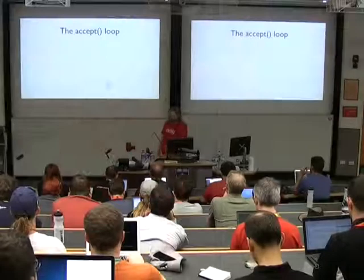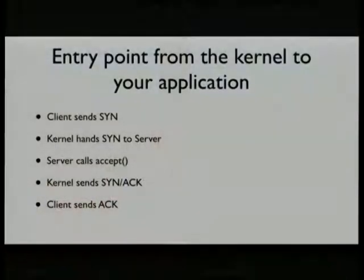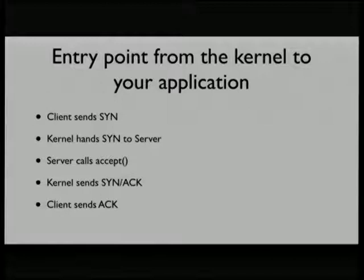This isn't a deep dive into TCP — just enough to get you by. Starting with the accept loop: this is where your application talks to the kernel, the boundary between the two. A client sends the traditional three-way handshake. The kernel hands this to your server; the server decides what to do by calling accept. The problem is what happens when your application can't respond fast enough.